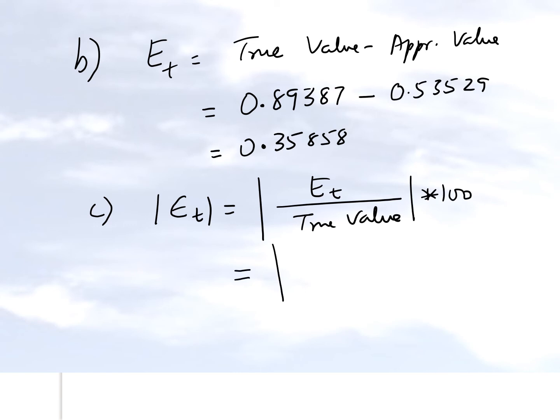Here we get this to be this quantity which we just found out, the true value is this quantity, and we multiply by 100. And we get a relative true error of 40.115%, which is huge.